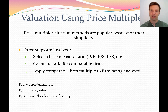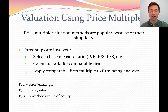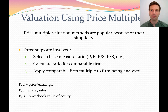So the three steps are: select a ratio such as a price to earnings ratio, find a company that's similar to the company you want to value, calculate the price to earnings ratio for that other company, and because these two companies are similar, use the price earnings ratio of the competitor firm and apply it to the firm you're valuing to come up with an estimate of its value.